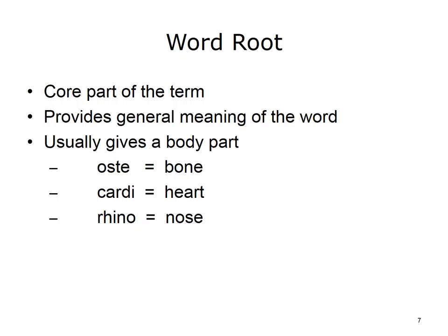The word roots are the core part of the term and provide the general meaning of the word. Word roots usually refer to a body part. Examples include oste, meaning bone; cardi, meaning heart; and rhino, meaning nose.